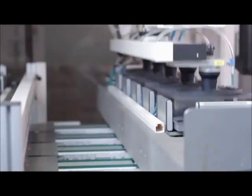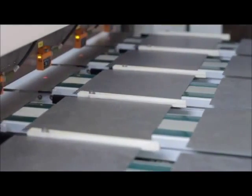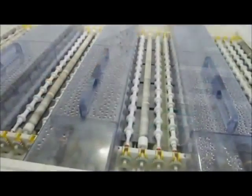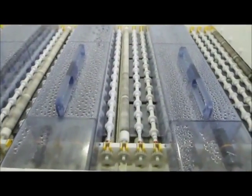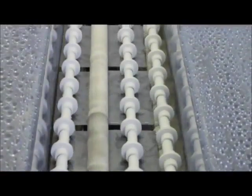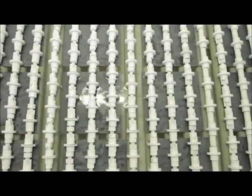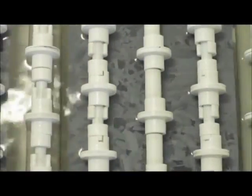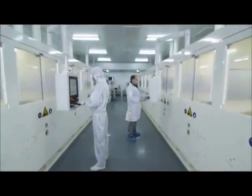The first step in manufacturing solar cells is a process called wet chemical texturing. The wafers are submerged in nitric and hydrofluoric acid baths. This process not only cleans and removes the soiling and damage that occurs during the earlier sawing process, but it also enlarges the surface of the wafer.